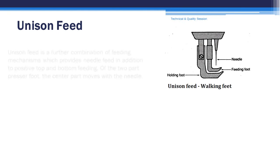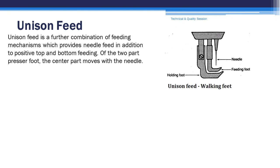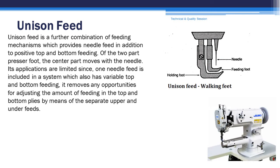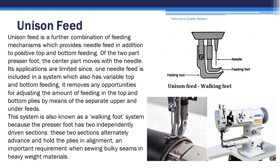Unison feed is a further combination of feeding mechanisms which provides needle feed in addition to positive top and bottom feeding. Of the two-part presser foot, the center part moves with the needle. Its applications are limited since once needle feed is included in a system which also has variable top and bottom feeding, it removes any opportunities for adjusting the amount of feeding in the top and bottom plies by means of the separate upper and under feeds. This system is also known as a walking foot system because the presser foot has two independently driven sections. These two sections alternatively advance and hold the plies in alignment, an important requirement when sewing bulky seams in heavyweight materials.